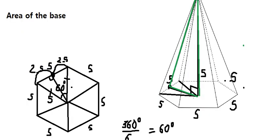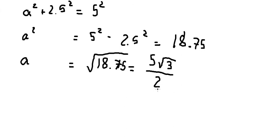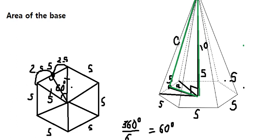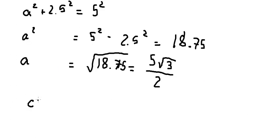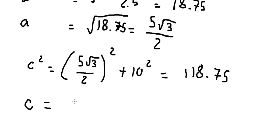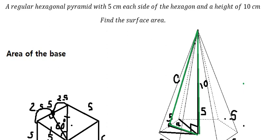So the apothem of the base is 5√3/2. Now we need to find the slant height. The pyramid height is 10 and the apothem of the base is 5√3/2. Using the Pythagorean theorem: slant height² = (5√3/2)² + 10² = 18.75 + 100 = 118.75. Taking the square root, the slant height equals 5√19 over 2. This is the height of each triangular face.